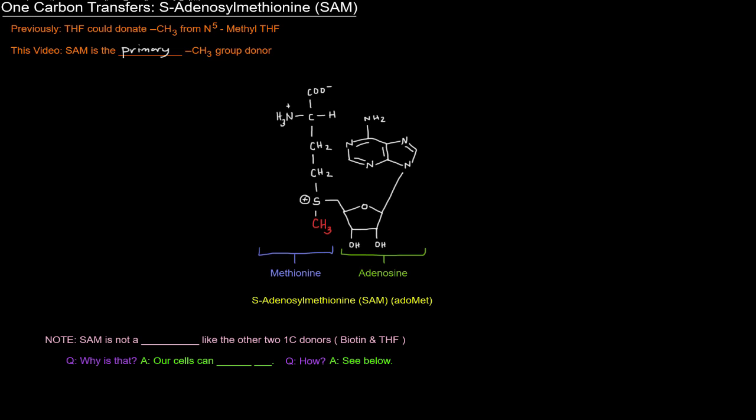Now, SAM is not a vitamin in the way that the other two one carbon donors, biotin and THF, are. Well, why is that? Why is it not a vitamin? Well, it's because our cells can actually make it. And part of the definition of a vitamin, one of the defining features of a vitamin is that it cannot be made by our cells. It must be consumed in our diet. So how is it that we can make it? Let's check this out.